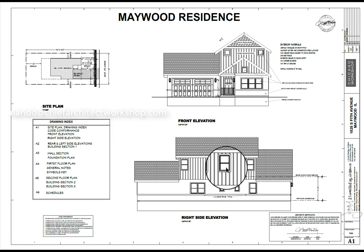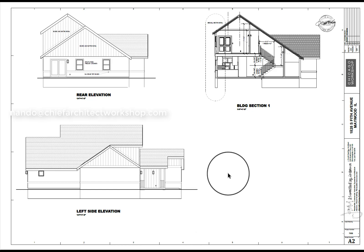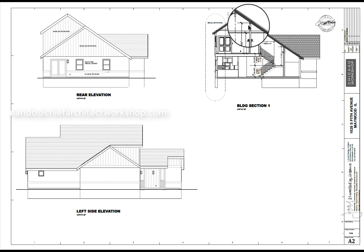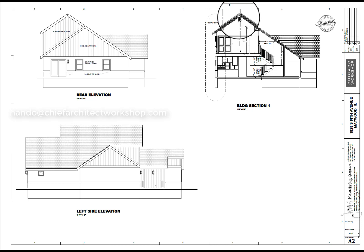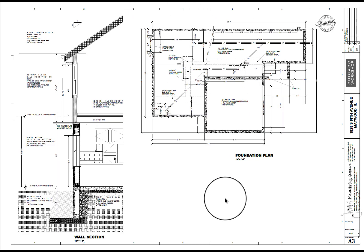Sheet 2 continues with elevations. We don't have as many notes since materials have been called out on the other sheets. We have a building section that shows how the stair provides head clearance, and notice the use of the thermosteel panel in the wall section, carried on some land beams. Thermosteel panels can only span about 11 to 12 feet, so we have to break up the span both aesthetically and structurally.